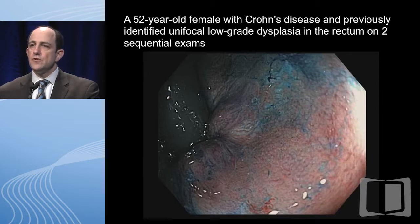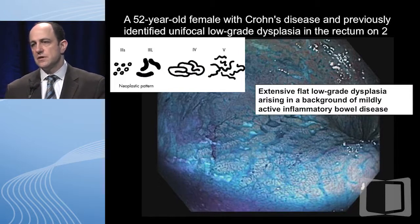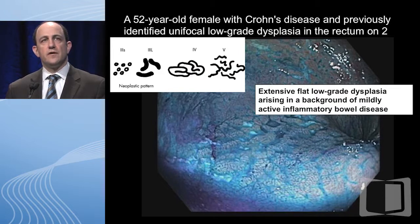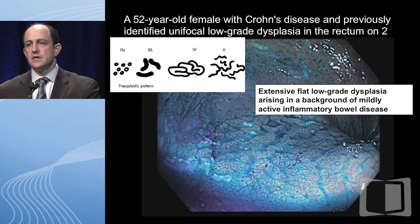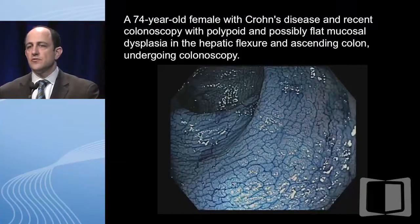A 52 year old woman with Crohn's and previously identified unifocal low-grade dysplasia in the rectum on two sequential exams had this finding in her rectum now. One thing I wanted to show: in the rectum you can see dilated crypts as a normal variant that can confuse you, but this is not what you want to see. There was a lot of distortion, distorted glands and changes — this was extensive flat low-grade dysplasia arising in a background of mildly active IBD, and this was treated with surgery.